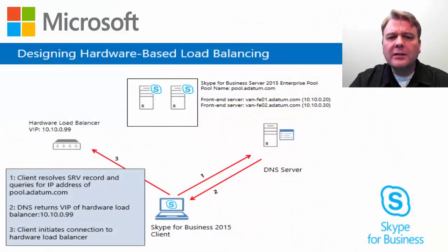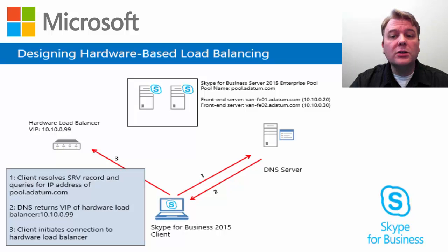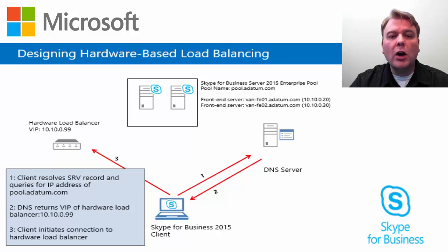First, let's discuss hardware load balancing. Hardware load balancing requires separate load balancing devices that receive client traffic on dedicated virtual IP addresses, or VIPs. These load balancing devices distribute client connections to servers in the pool that they are load balancing. In previous versions of Skype for Business Server 2015, hardware load balancing was the only available method that network administrators could use.